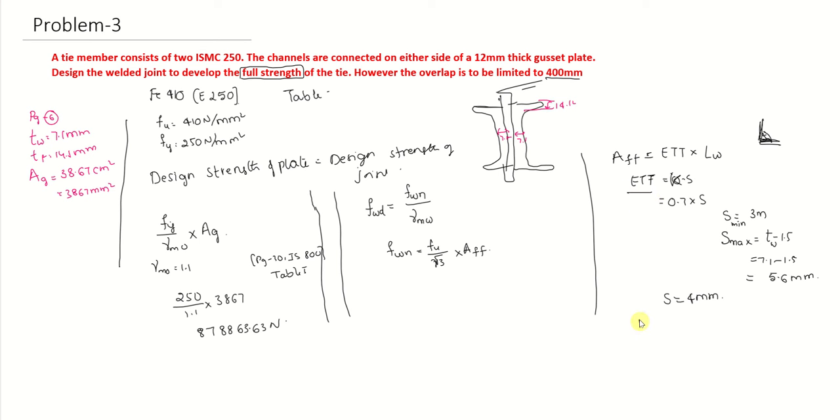In order to find out effective throat thickness, that is K 0.7 into 4, we get 2.8mm. Now effective area - how can I write it? 2.8 effective throat thickness into length of the joint which we need to find out. FU we know, 410 by root 3 into area effective is 2.8 into length of the weld. If you equate them, the length of the joint would be 1658mm upon calculation.